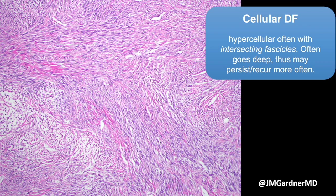Anecdotally, if you remove the bulk of a cellular DF even with focally positive margins, it usually will not recur. I do mention in my reports that removing the bulk of the lesion is probably acceptable. I don't think you need two-centimeter margins or extensive surgical excision or Mohs to ensure negative margins as you would for DFSP. Cellular DFs tend to persist or recur more than conventional DFs, and excision could be considered to reduce that risk.